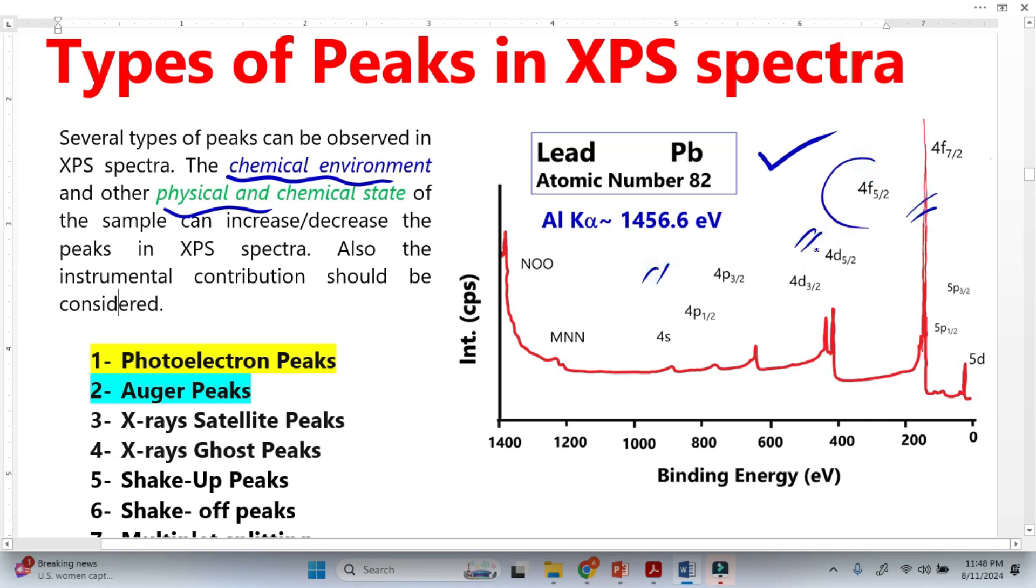You see these are basically photoelectron peaks and these two are basically Auger peaks. There are also possibilities of other types of peaks such as satellite peaks, x-ray ghost peaks, shake-up peaks, but in today's video I will only talk about the photoelectron peaks.